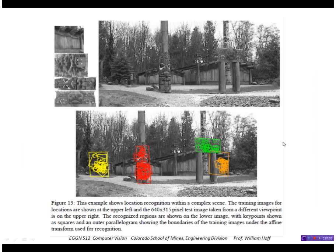In another example, feature points are extracted from training images, placed in a database, and searched for in a larger image. The system was able to successfully find those objects in the new image.